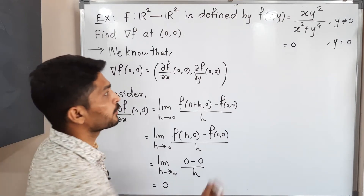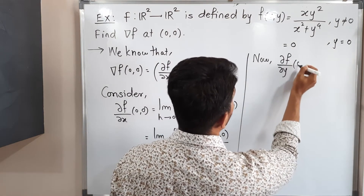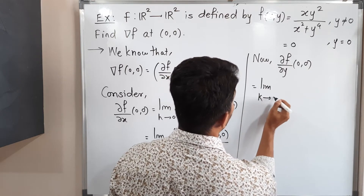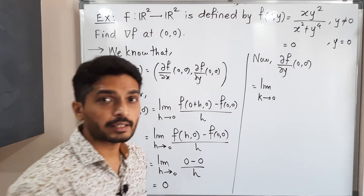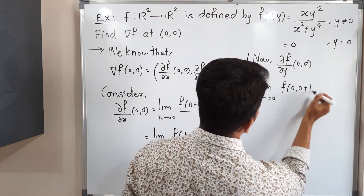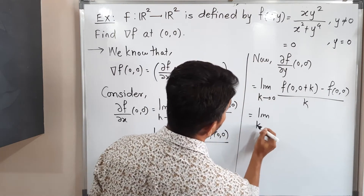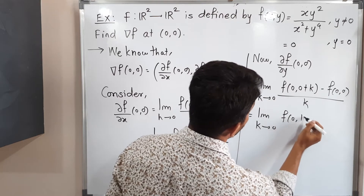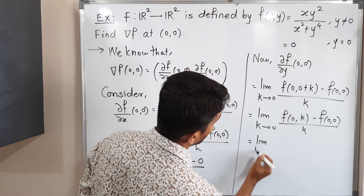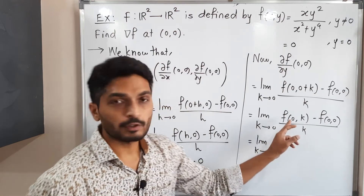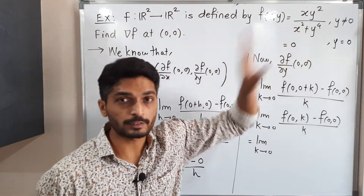Now let us find ∂f/∂y at (0,0). This equals limit as k→0. We are finding the partial derivative with respect to y, the second component, so we add k in the second component only: [f(0, 0+k) − f(0,0)] divided by k. For f(0, k), the value of x is 0 and the value of y is k. Since y is non-zero, we use the first definition to find its value.